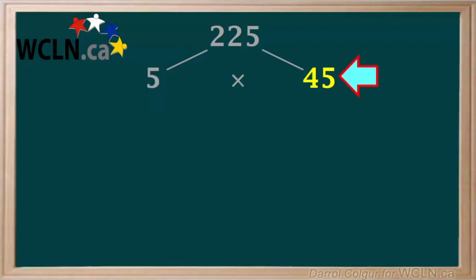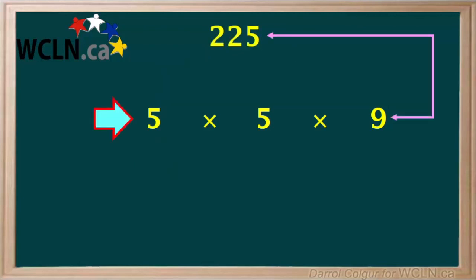But we can factor 45 into 5 times 9, which we'll write down here. We'll also bring this 5 down and write it here. This is to remind us that 225 is the same as 5 times 5 times 9.